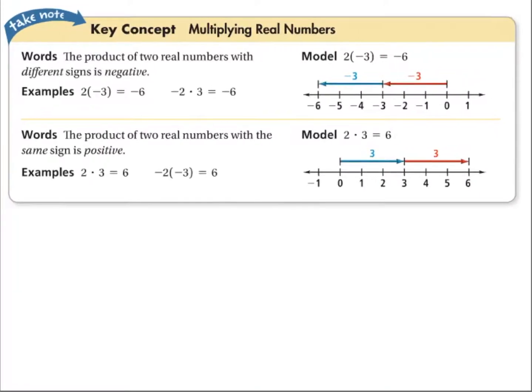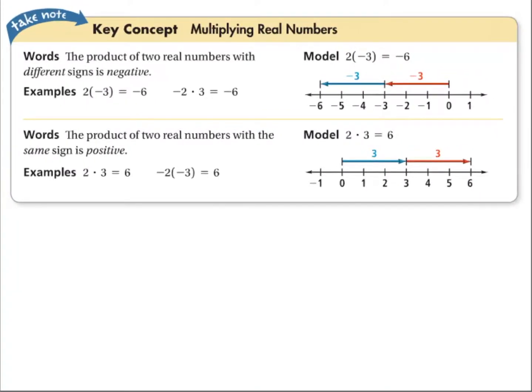So positive times positive equals positive, and negative times negative equals positive. Same signs, positive; different signs, negative.